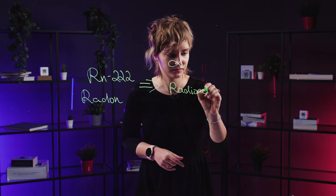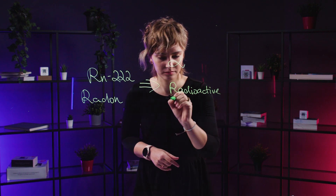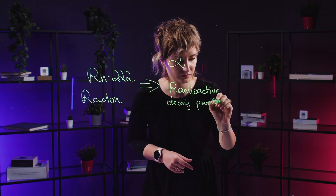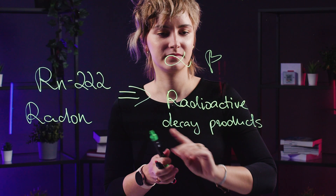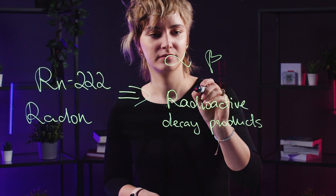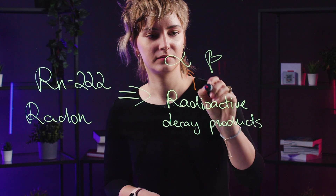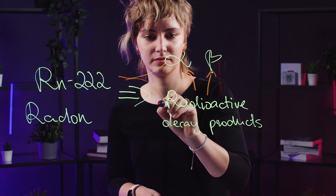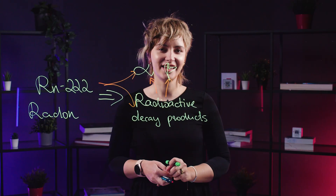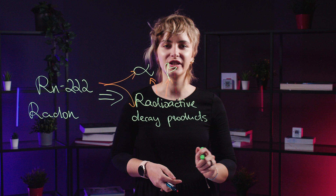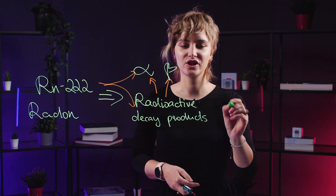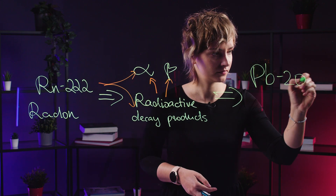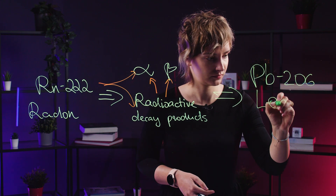As radon decays, it creates a chain of radioactive elements, each emitting either alpha or beta particles. This decay chain eventually leads to the formation of lead, which is stable but still not something you want in your body.